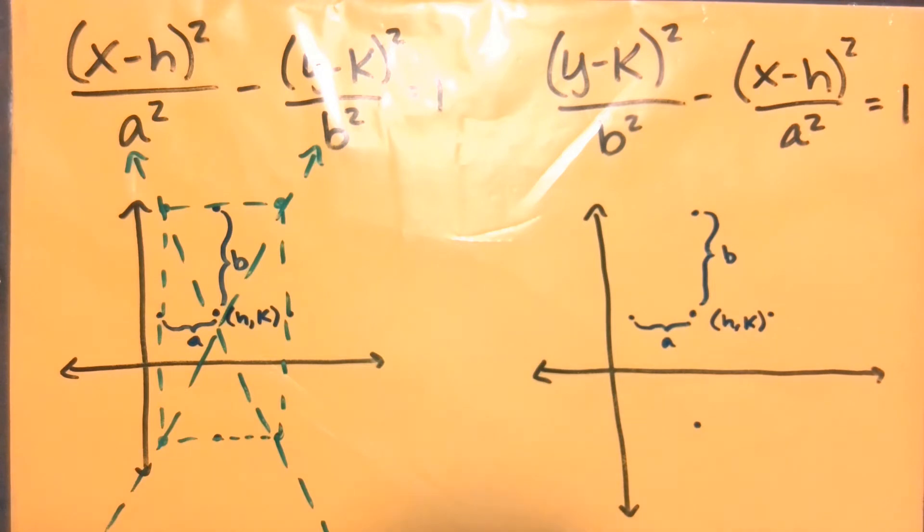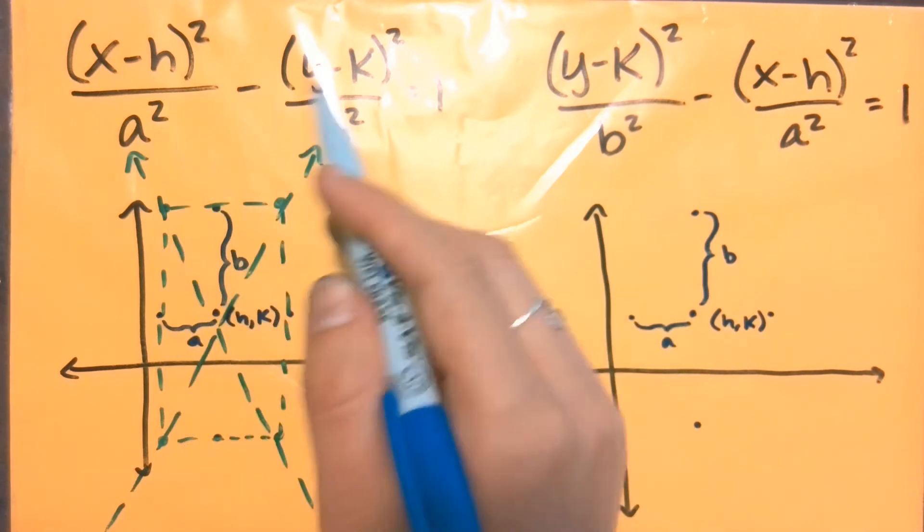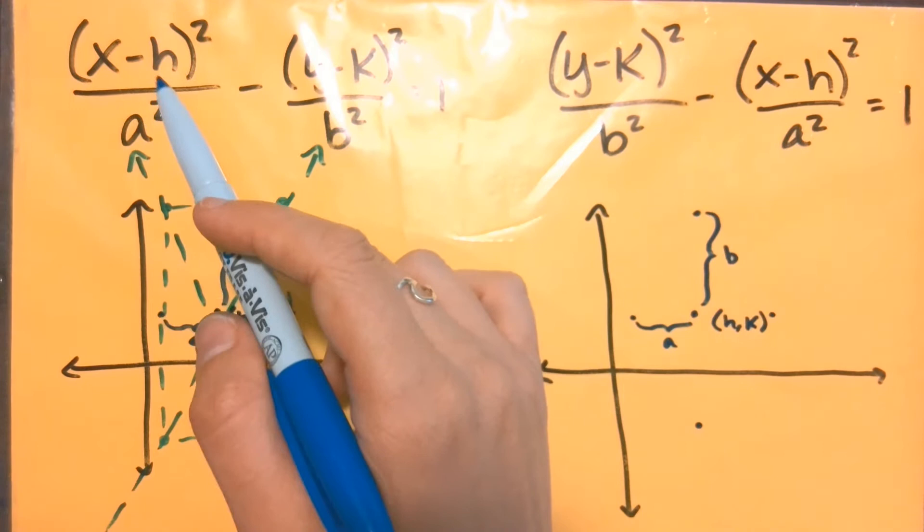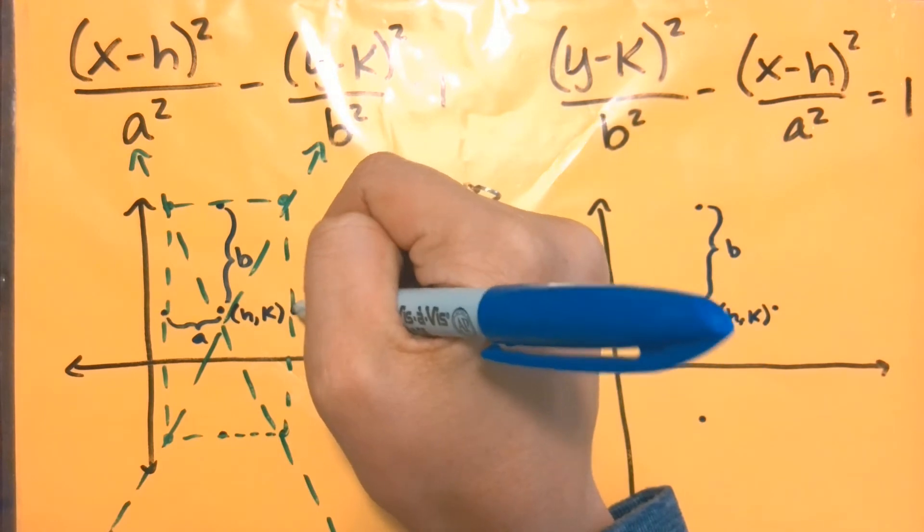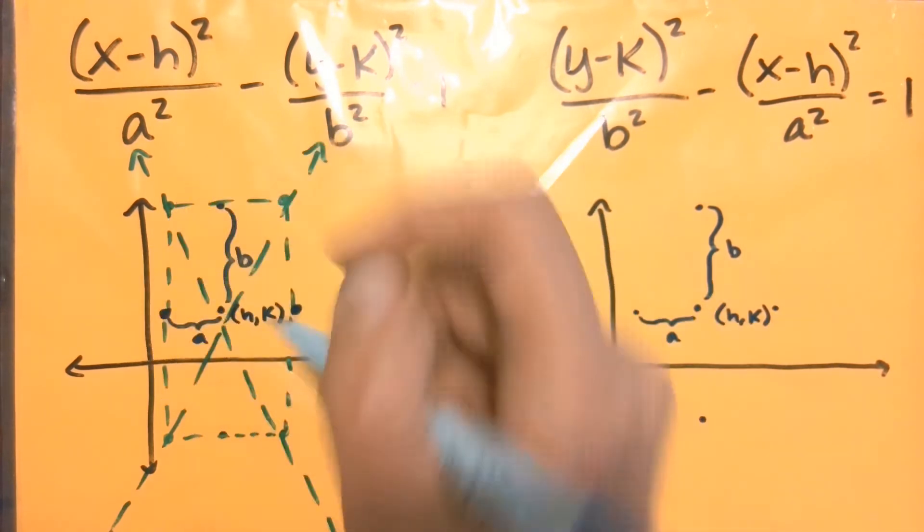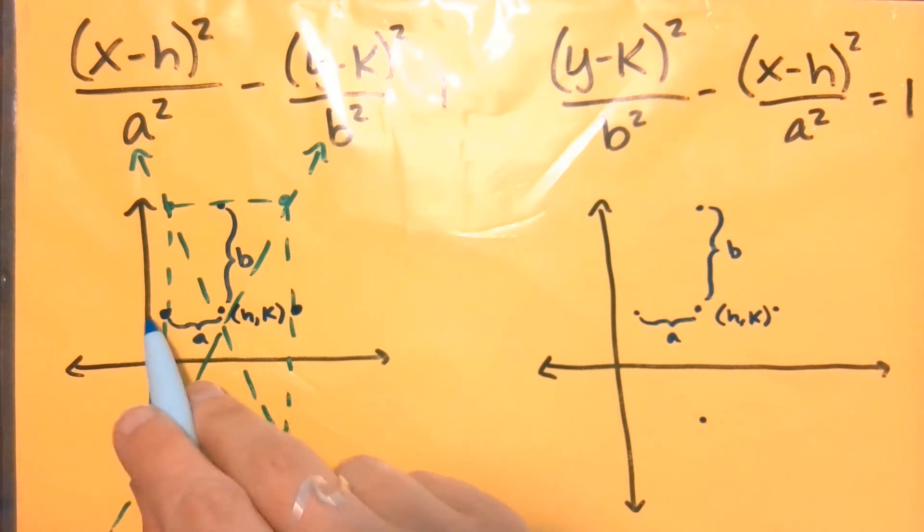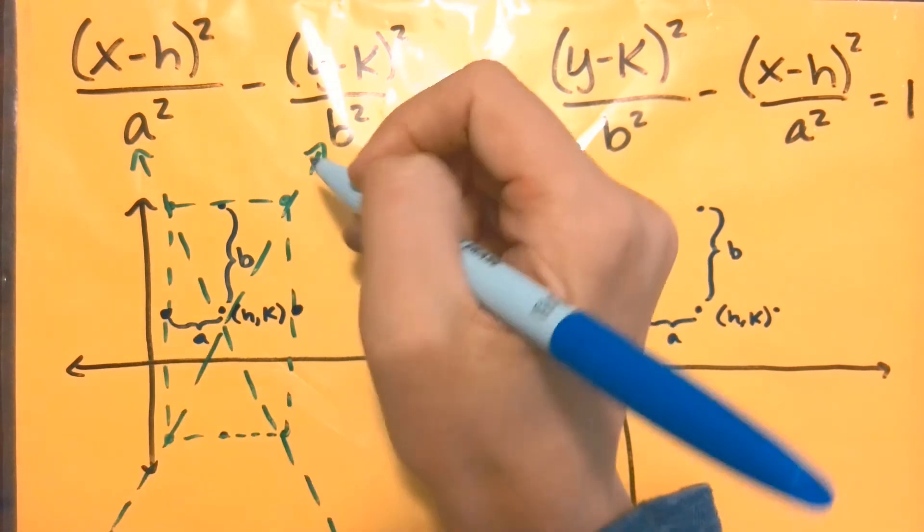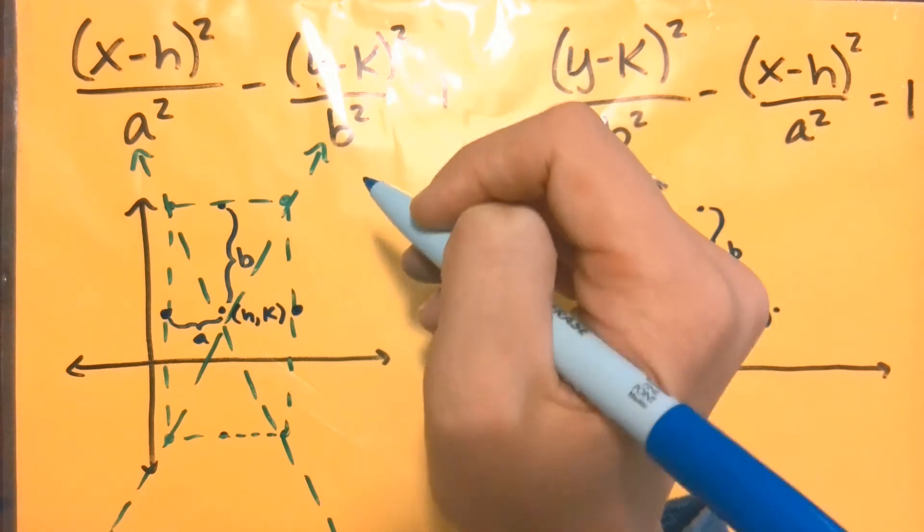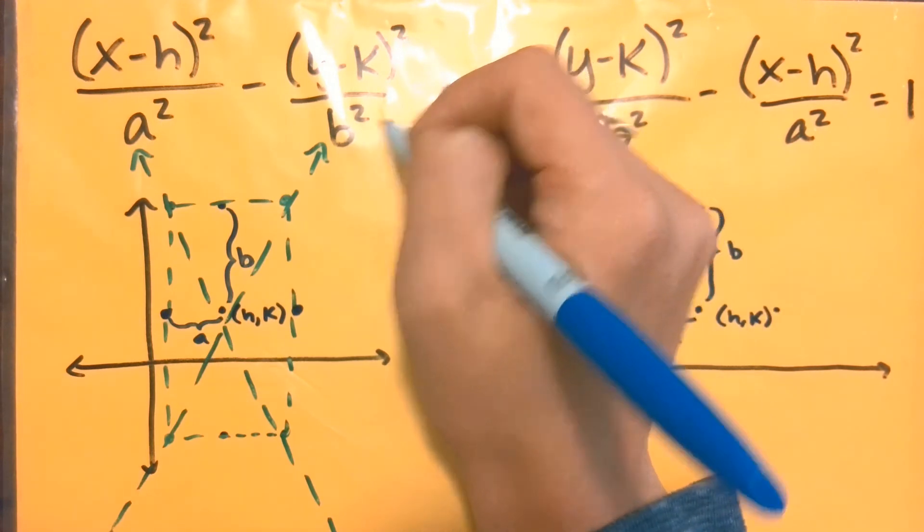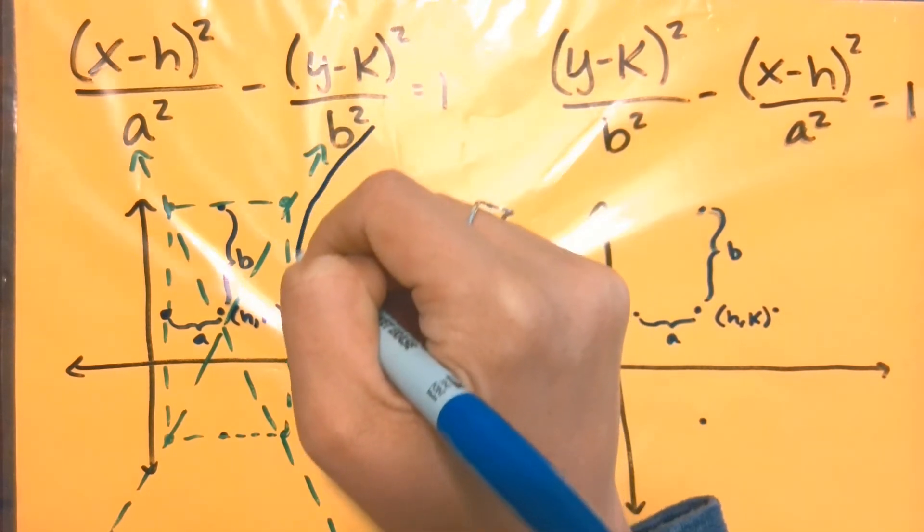So now that I have all of my guides in place, actually graphing the hyperbola has to do with whether x or y is the first term. And since my x is the first term and x is a horizontal direction, that means that my hyperbola is going to be horizontal. So I'm going to use the points that were to the right and the left of the center, and I'm going to draw in, it's basically going to be a parabola on both sides. That's kind of what a hyperbola is.